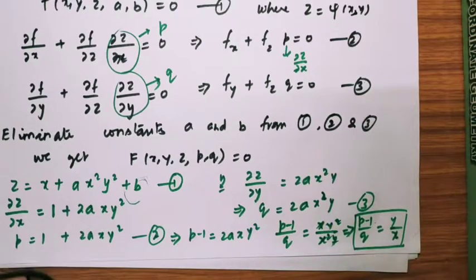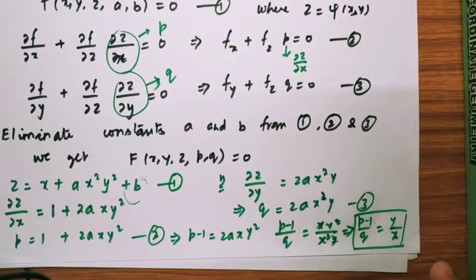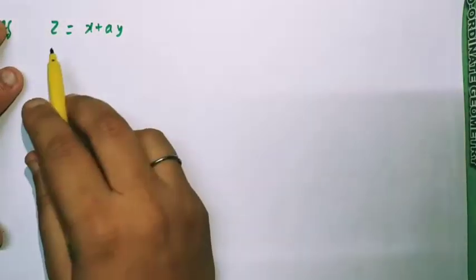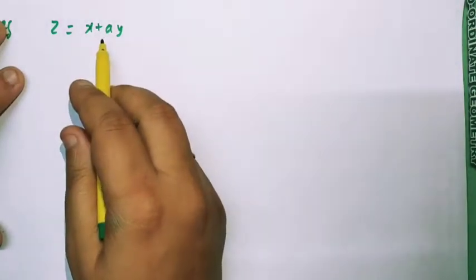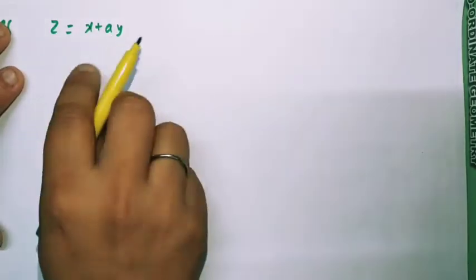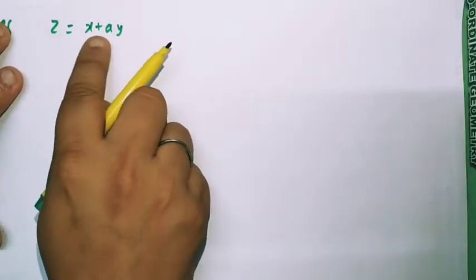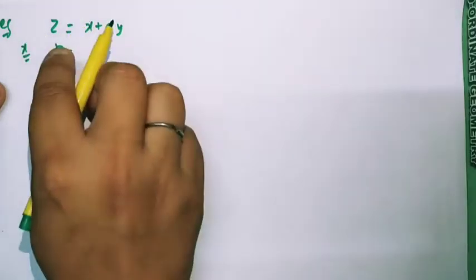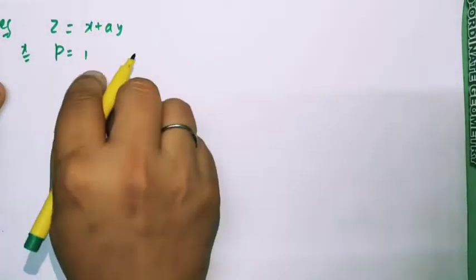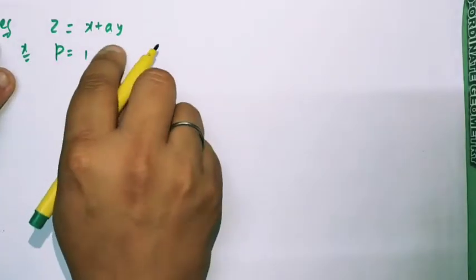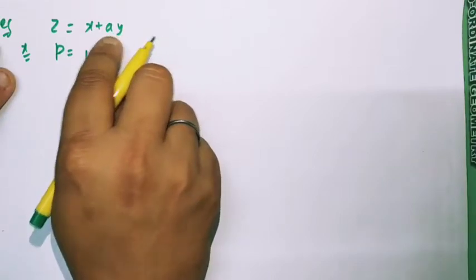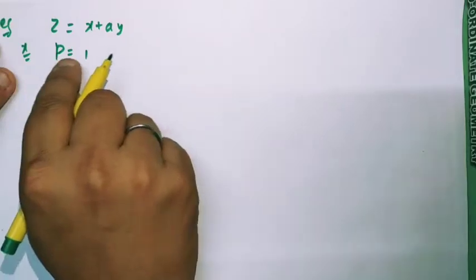Now let us look at another problem: z = x + ay, where a is only one arbitrary constant. I will differentiate because there are two independent variables, x and y. Differentiating partially with respect to x: p = ∂z/∂x = 1, since ay is a constant when y is kept constant. So our first equation gives p = 1.